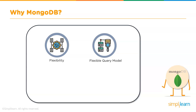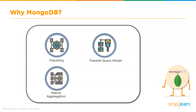Flexible query model: a user can selectively index some part of a document or query based on attribute values, regular expressions, or ranges. Next up is native aggregation. Native aggregation allows users to extract and transform data from MongoDB and either load them in a new format or export it to other data sources, making it extremely compatible.